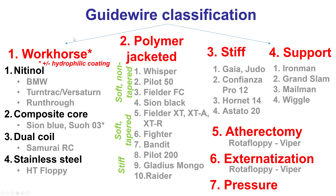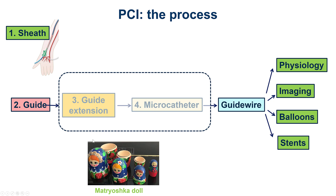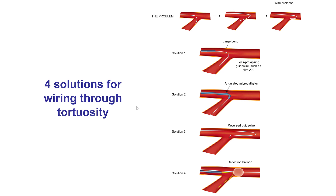We started with a workhorse C-on-blue, as always. A wire very useful for tortuosity is the SUO-03 — a 0.3g wire — though it was not available at the time. If soft wires don't work, advanced solutions for wiring through tortuosity include using less prolapsing wires such as the Pilot, an angulated microcatheter such as the Supercross or Venture, the reversed guide wire or hairpin technique, or the deflection balloon — all of which will be discussed in a separate video.